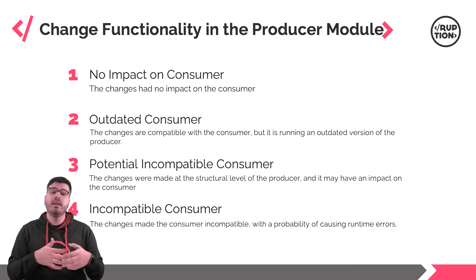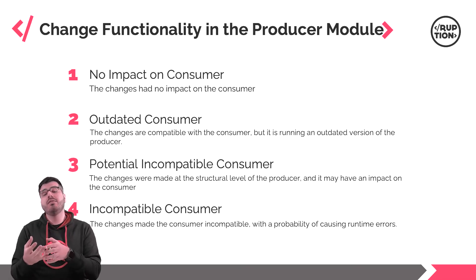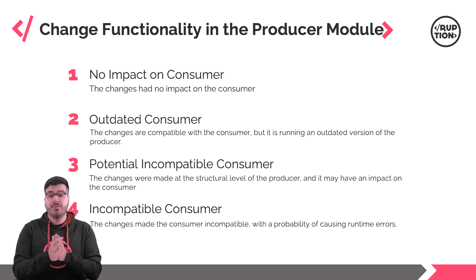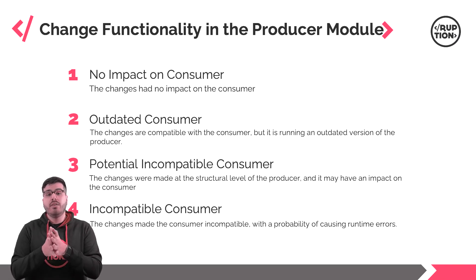In this case, the changes were made at the structural level of the producer and may have an impact on the consumer, making it incompatible. To fix this, you need to republish the consumer to verify if the changes are compatible or not. If they are, there is no need to refresh the producer dependencies.